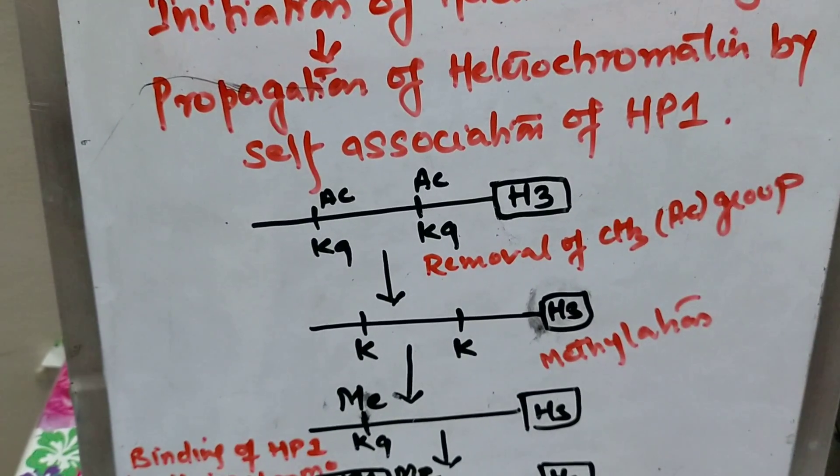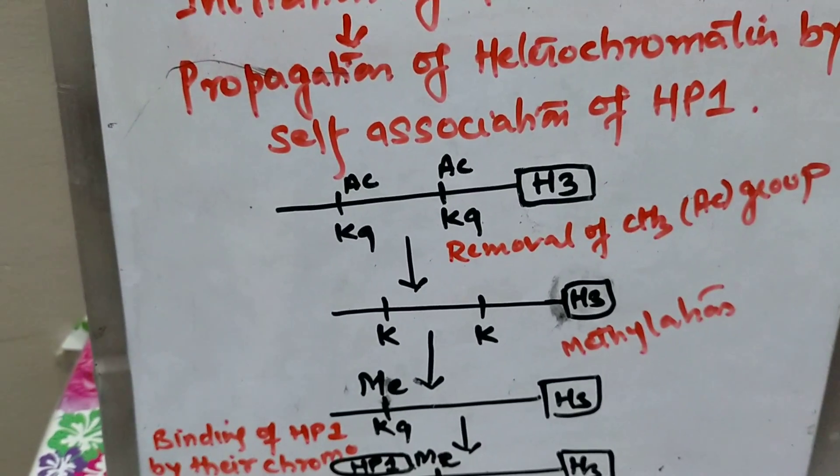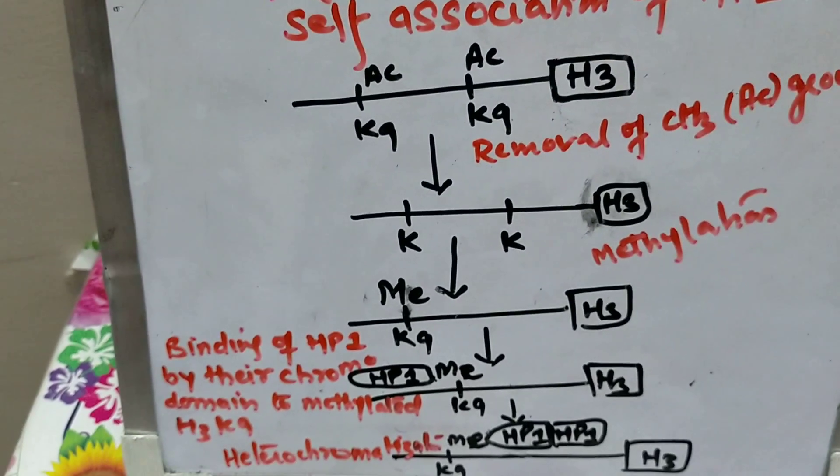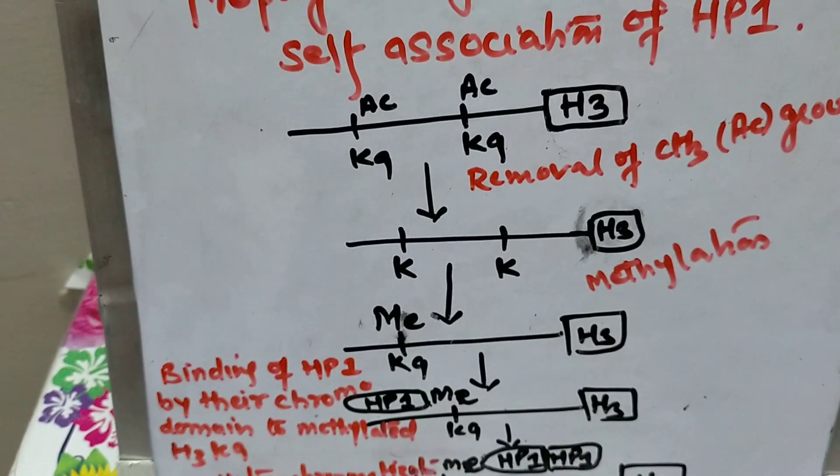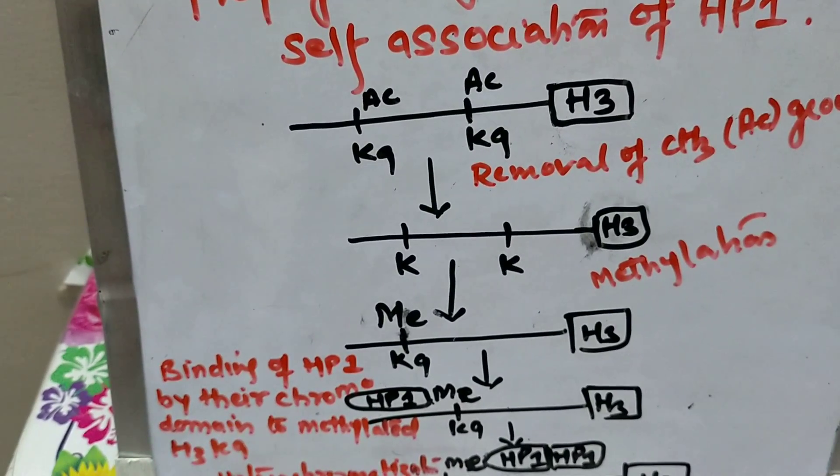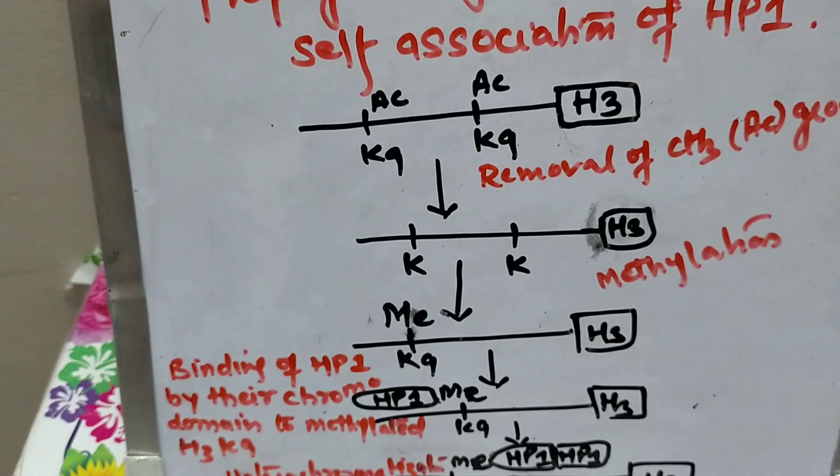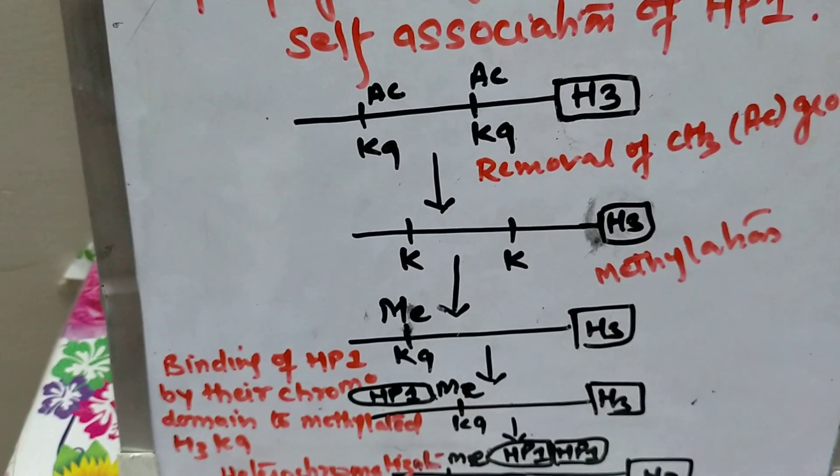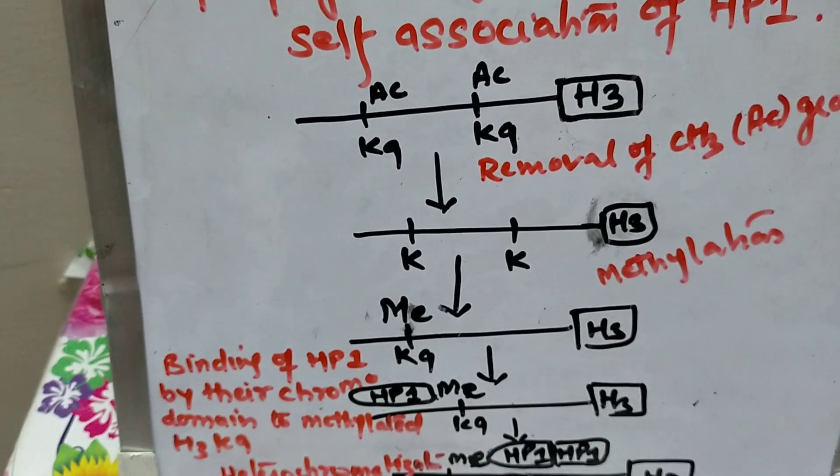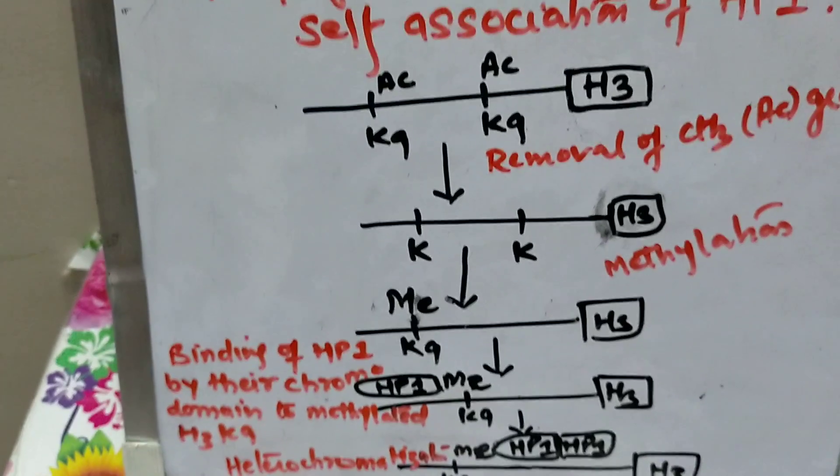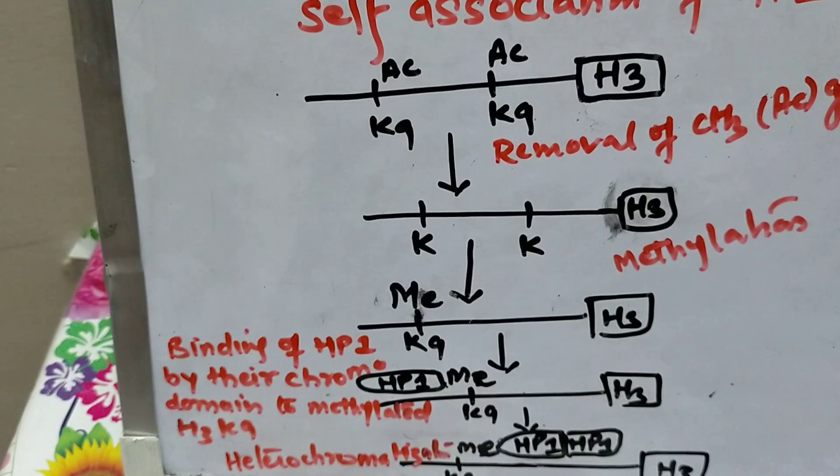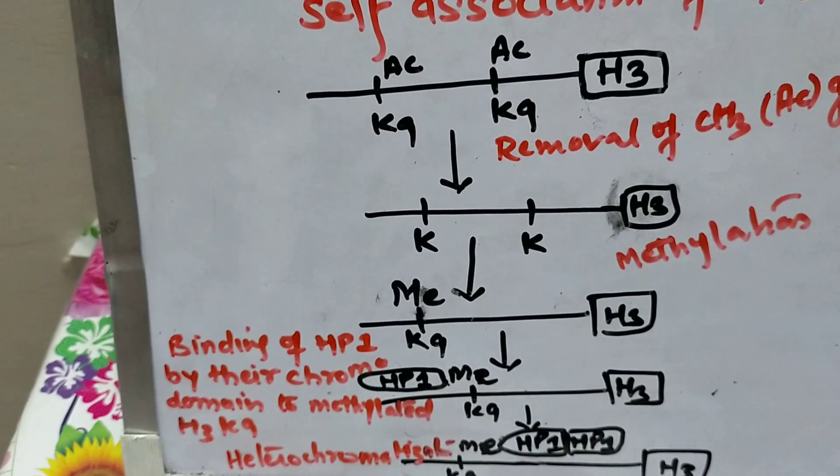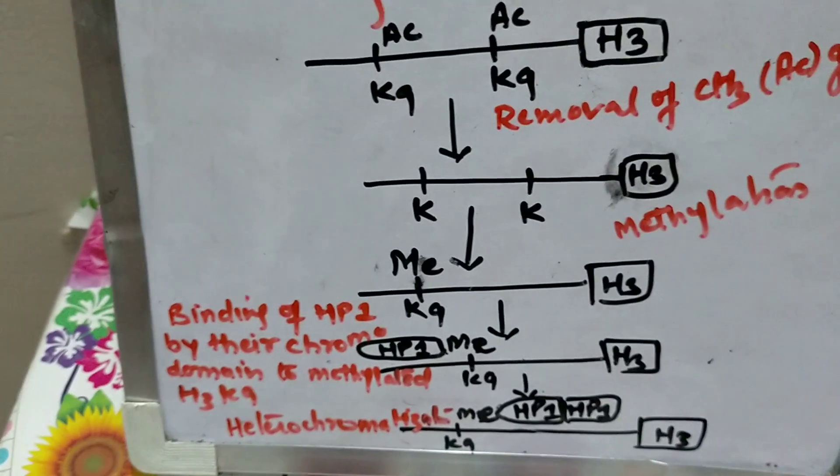This methylated lysine of this histone is recognized by a protein which is called HP1 protein. Now we know that any methylated histone is recognized by chromodomain of a particular protein. This HP1, by its chromodomain, binds to this methylated lysine.